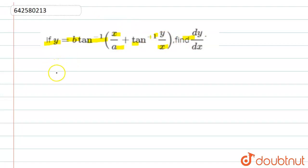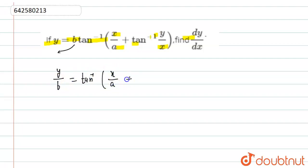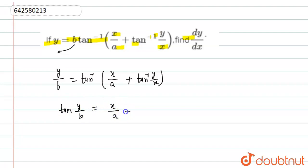Now, this can be rewritten by moving terms to the left side: y/a is equal to tan⁻¹(x/a) + tan⁻¹(y/x). This further becomes tan(y/b) is equal to x/a + tan⁻¹(y/x).